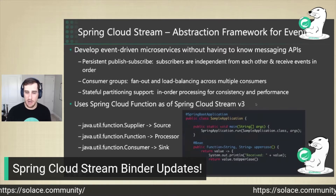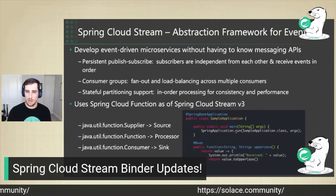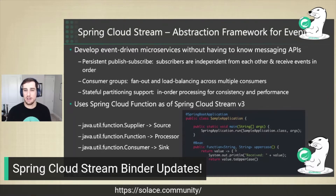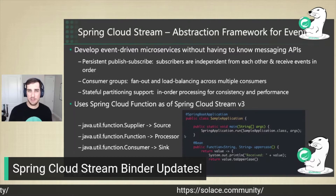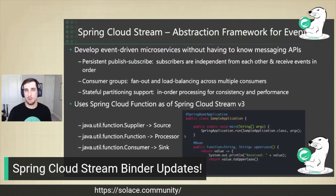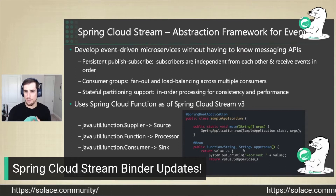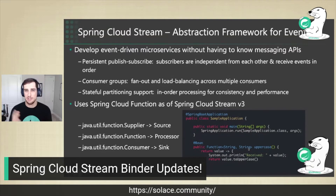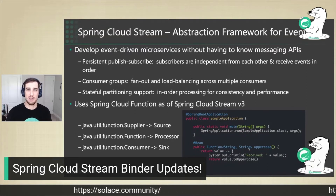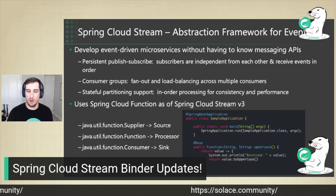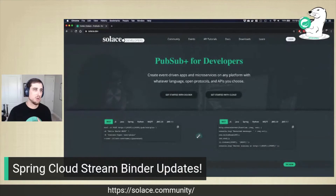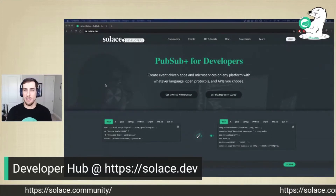As a quick example, I've got some code here that shows you basically just create a generic Spring bean. This Spring bean gets wired up by the Solace binder and the Spring Cloud Stream framework, allowing it to receive a string, uppercase that string, and publish out the updated string. That's packaged into a message and goes out onto the event mesh to be consumed by your other apps. If you want to learn more, head over to our developer hub at solace.dev.